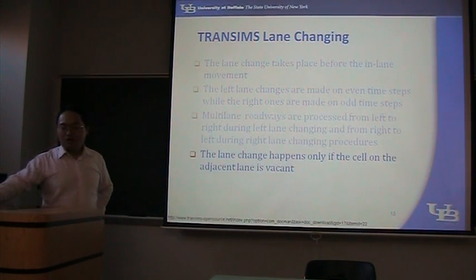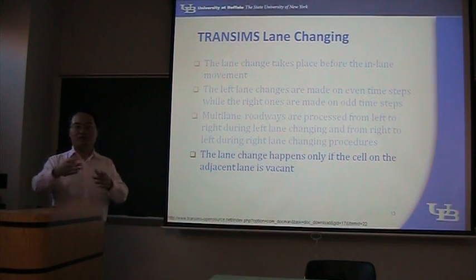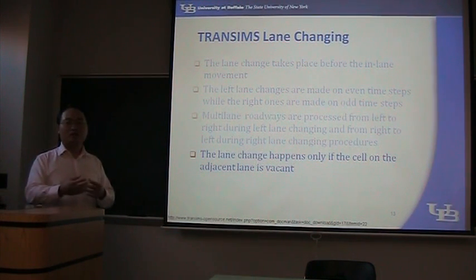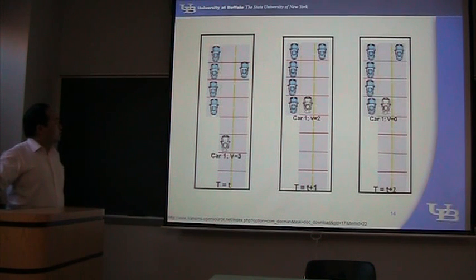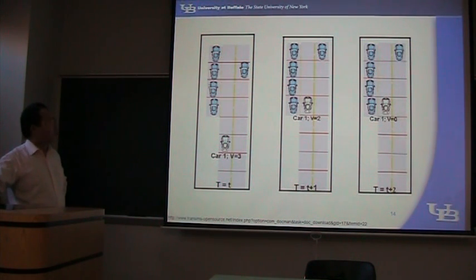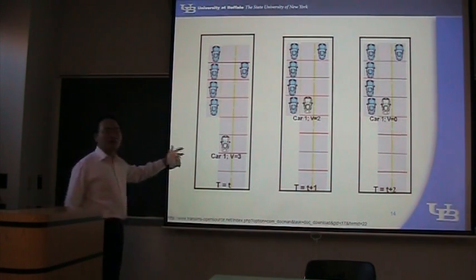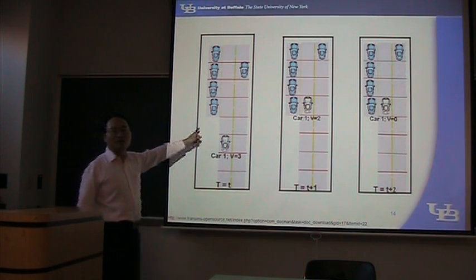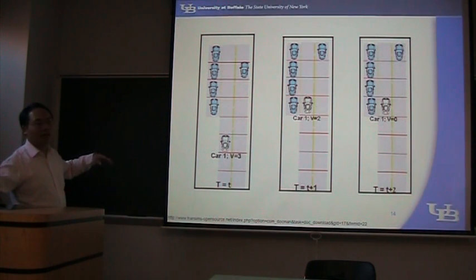Lane changes will happen only if the cell on the adjacent lane is vacant. If you want to change left, the cell on the left lane must be vacant. In Transims, there is a special case for parking lanes: if a vehicle needs to change left but the parking lane is full, the vehicle will first decelerate to reach that point, then wait there until it can find a gap. This only applies to turning parking lanes — it has nothing to do with the general logic to be introduced next.